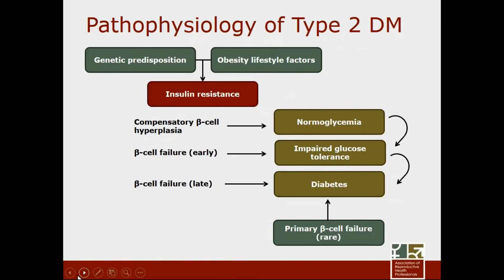Type 2 in contrast is more complicated. There is both a genetic predisposition and typically an obese phenotype or obesogenic lifestyle that together produce insulin resistance. Early on the body may have compensatory beta cell hyperplasia, and during that time the patient will usually be normal glycemic. But with time, as beta cells can't keep up with increased insulin need, people develop impaired glucose tolerance. If untreated, they progress to full-blown diabetes when their beta cells can no longer meet their body's demands.